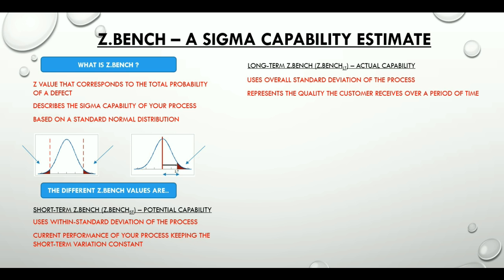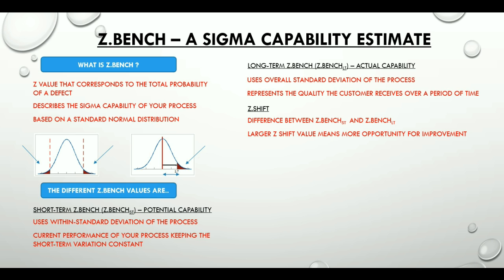An important concept to understand here is the Z shift, popularly known as the 1.5 sigma shift. This is the difference between short term and long term ZBench. The larger the difference, the more opportunity for improvement. Practitioners usually assume a 1.5 sigma shift, meaning a process actually drifts by 1.5 sigma over a period of time. So Z short term equals Z long term plus 1.5, or conversely, Z long term equals Z short term minus 1.5.